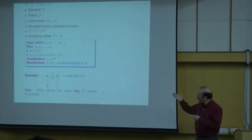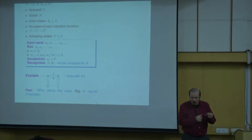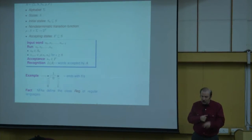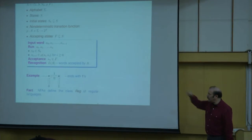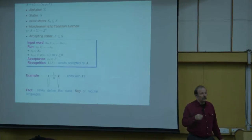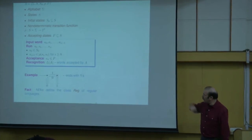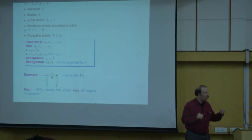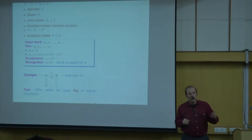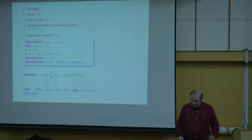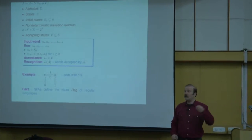Here is a little example. This automaton has two states, left and right. You enter on the left. Zero always takes you back to the left and one always takes you to the right. The right is the red circle, so it's the accepting state. To accept, you must reach the right state, which means the word has to end with one. The language described by this automaton is the set of all words that end with one. NFA defines the class of regular languages — a very robust class with many wonderful properties.